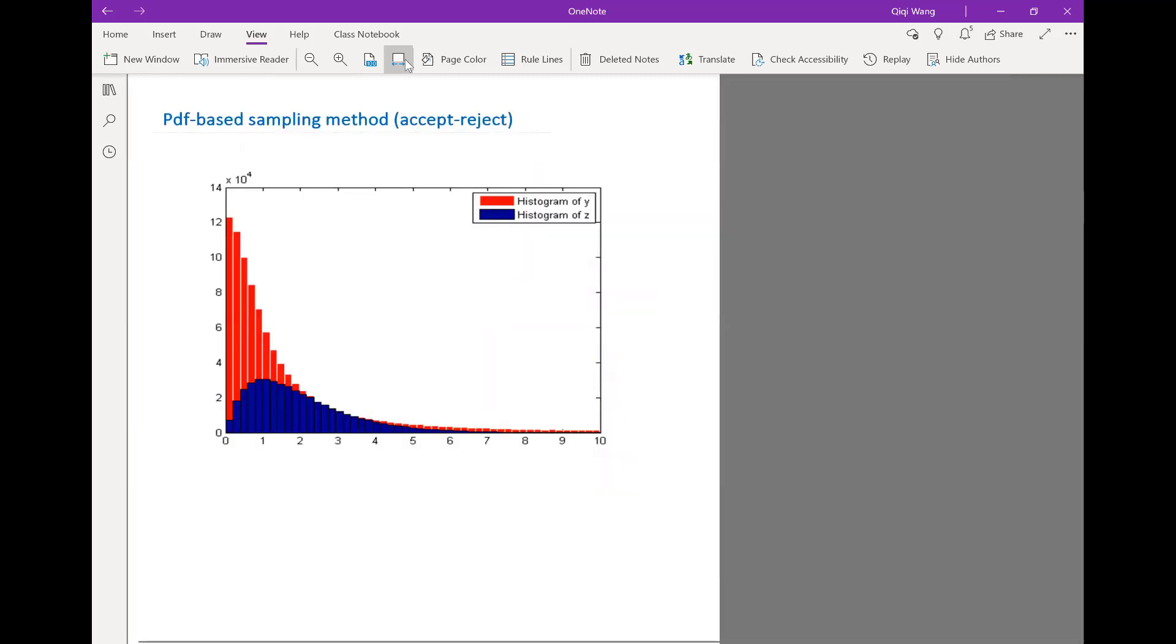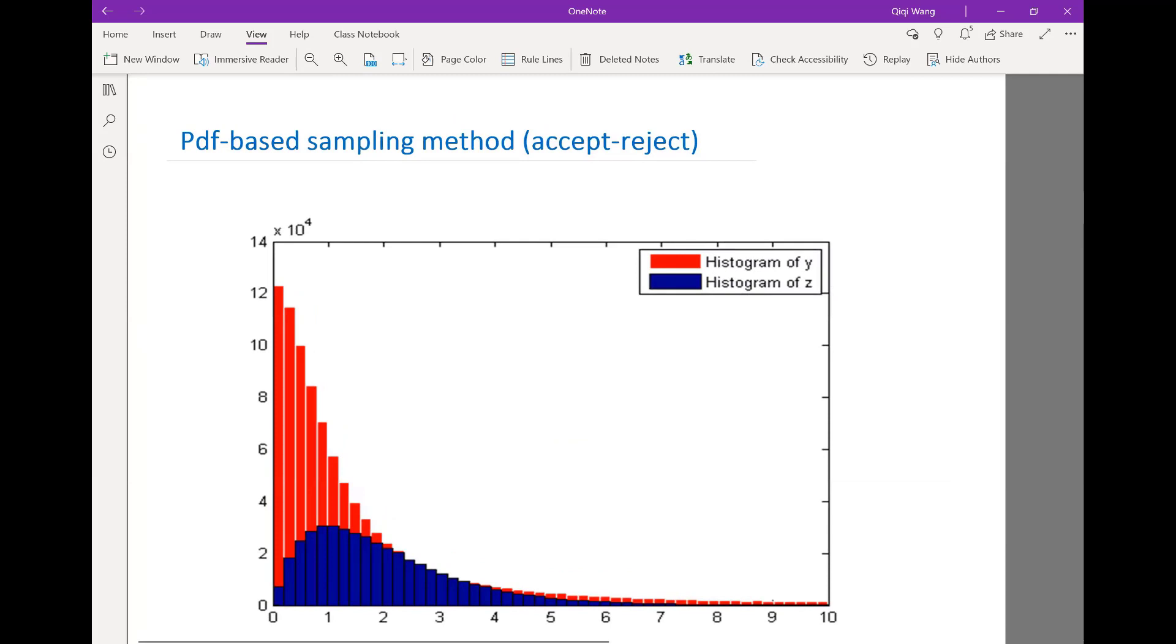Alright, and now let's actually take a look again at the PDF-based sampling method, the acceptance-rejection method.